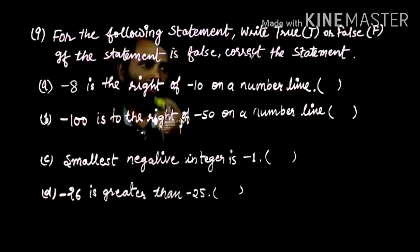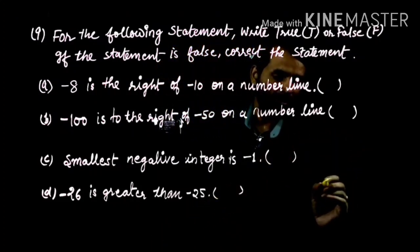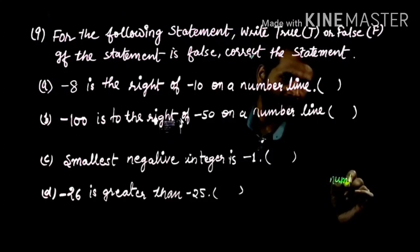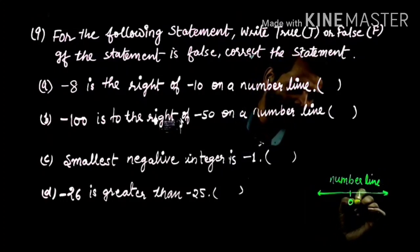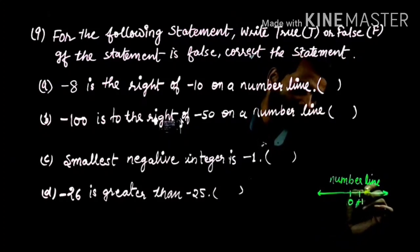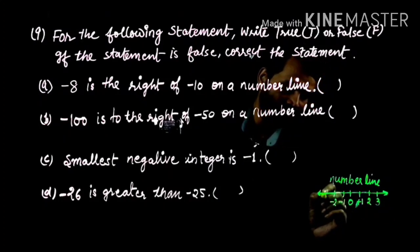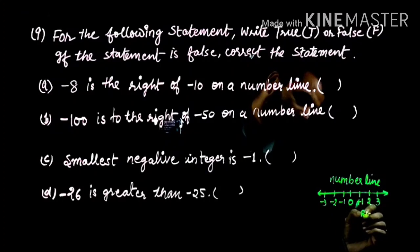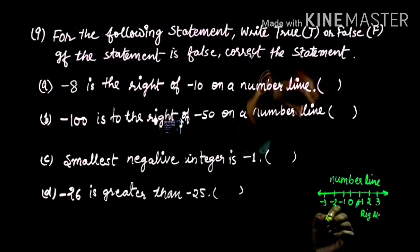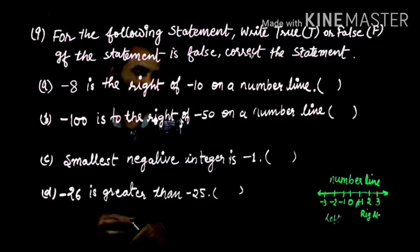First statement: minus 8 is to the right of minus 10 on the number line. Look at the number line — here is 0, then plus 1, 2, 3 on the right, and minus 1, minus 2, minus 3 on the left. The right side has greater values and the left side has smaller values.